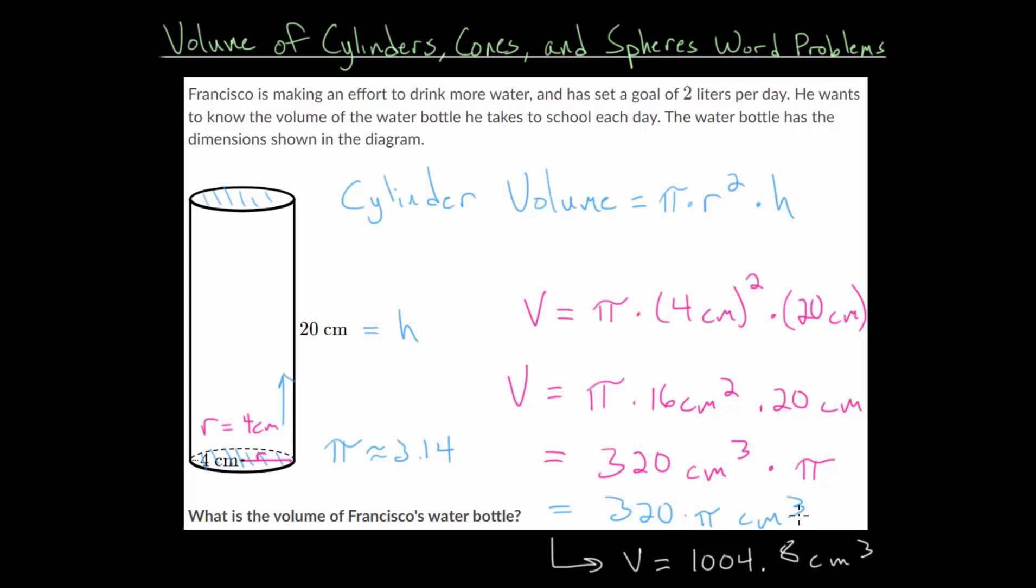So it depends what you're looking for. If you want the exact answer, then you'll leave pi in your answer. But if you want to get an approximate decimal answer, then you can use an approximation for pi, and calculate this to be 1004.8 cubic centimeters.